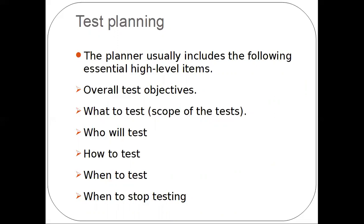What to test refers to what function or item, what features to test, and the scope of the test. Who will test refers to who is going to take complete ownership of the testing. How to test describes what strategies, methods, and tools are used in order to perform testing. When to test describes the schedule of the testing.